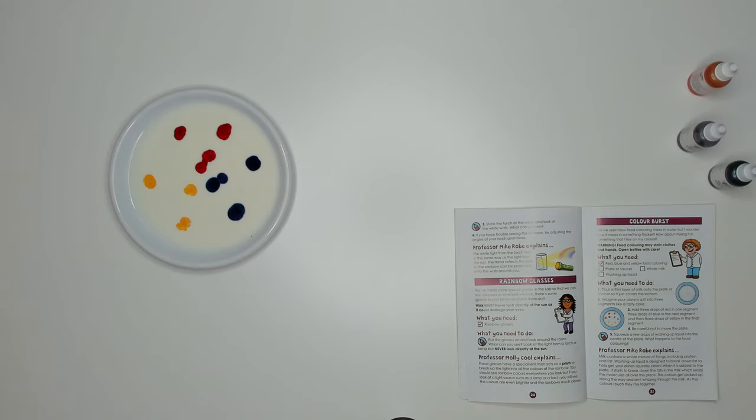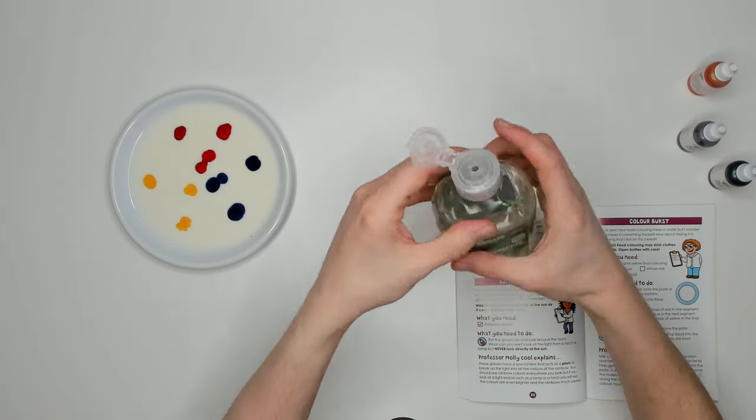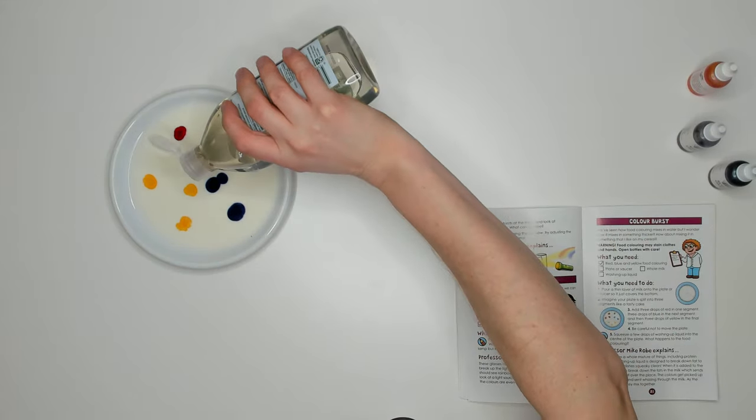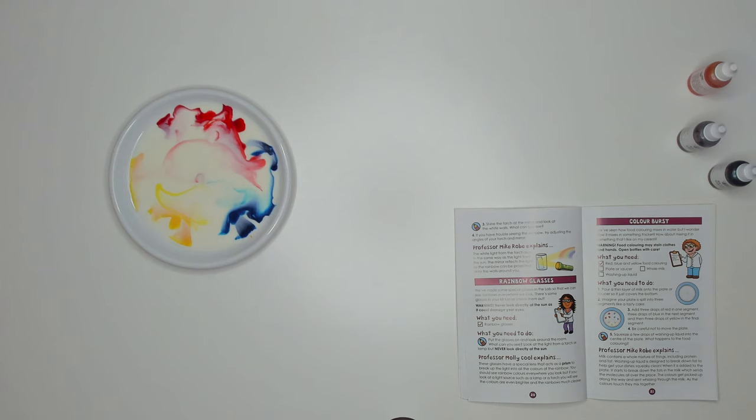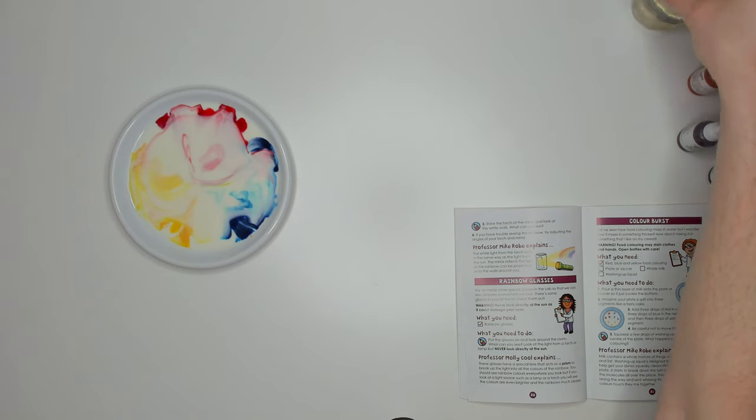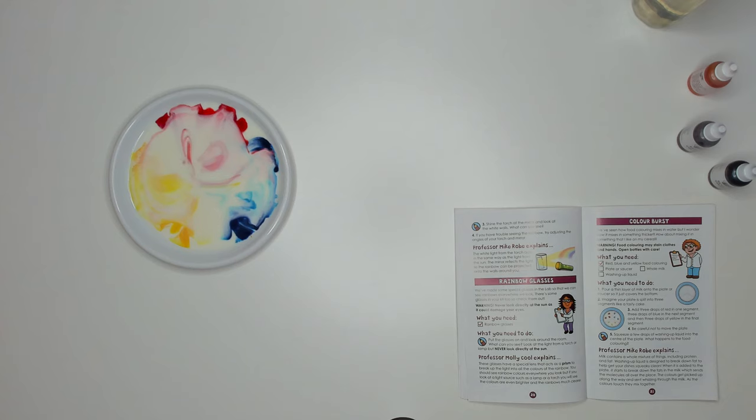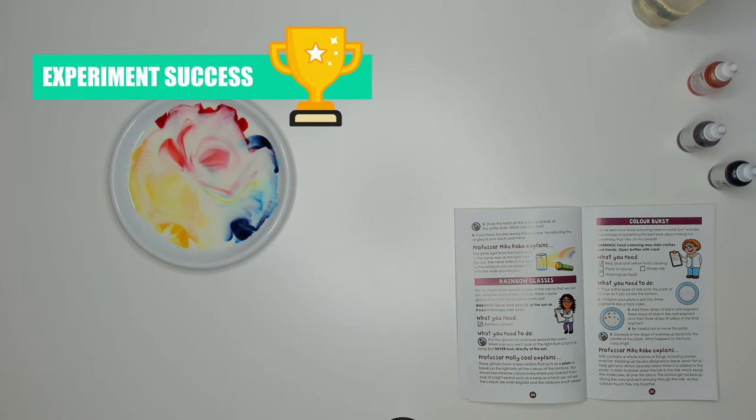And then we take the washing up liquid and just squirt a few drops into the centre of the plate. Whoa! That's awesome! And it's still moving! This is absolutely my favorite experiment. Now here's the science from the book. The washing up liquid is designed to break down fat so when you're washing dishes everything slides off the plates. So when it hits the milk it sends the molecules of color scattering everywhere. This experiment is a definite success. I love it!